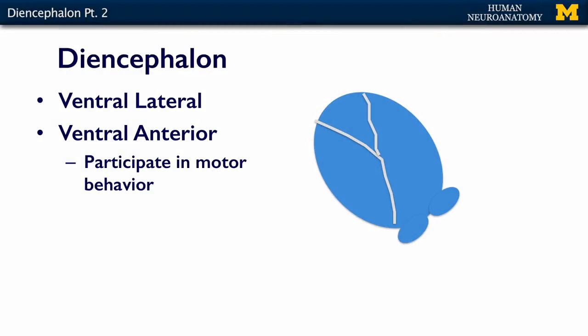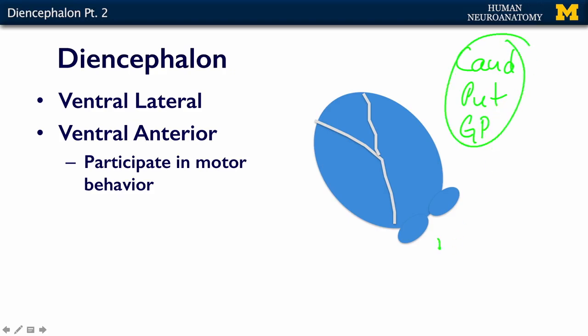The diencephalon — specifically the dorsal thalamus — is the area we're talking about at this point in the lecture. It also participates with the striatum and the pallidum as part of the basal nuclei that controls motor behavior. When the basal nuclei — the caudate, the putamen, and the globus pallidus — all come together with the substantia nigra and another part of the diencephalon, which is the subthalamic nucleus...